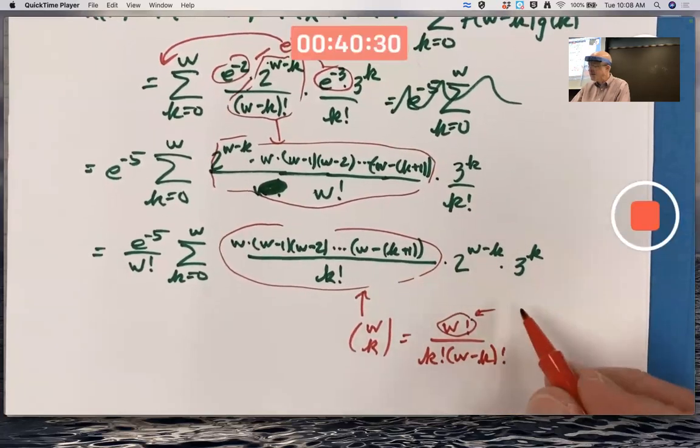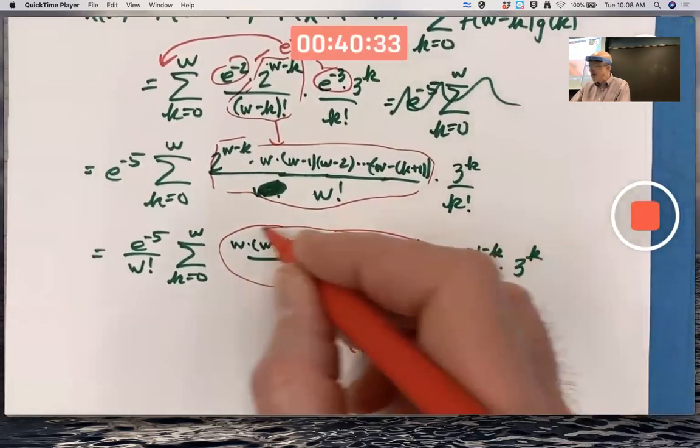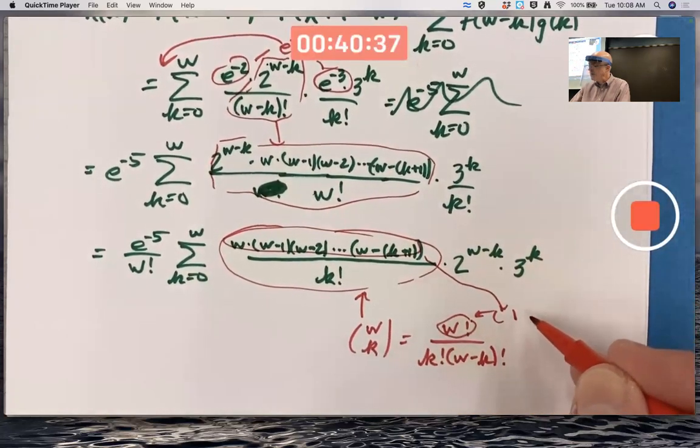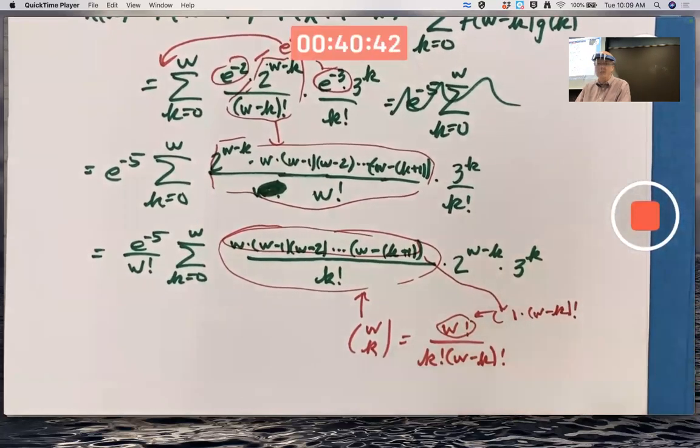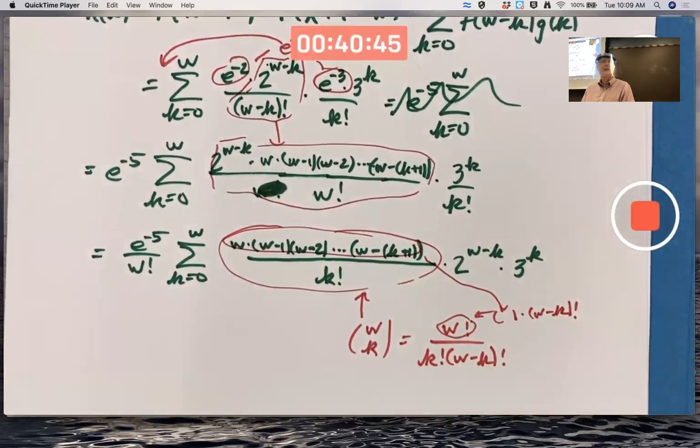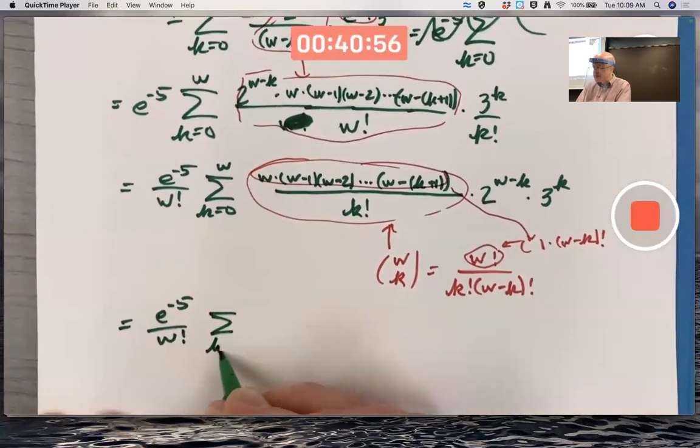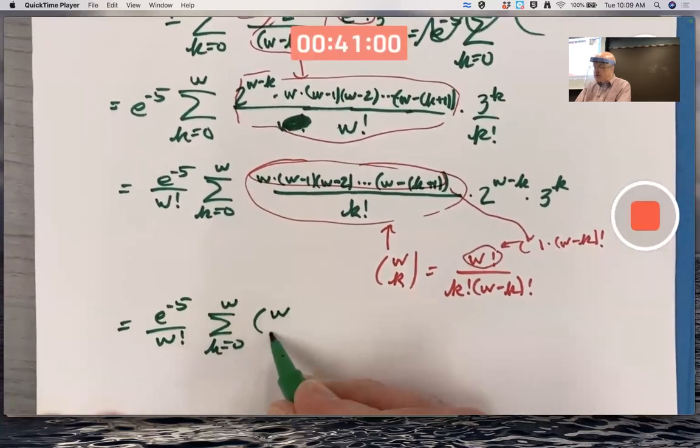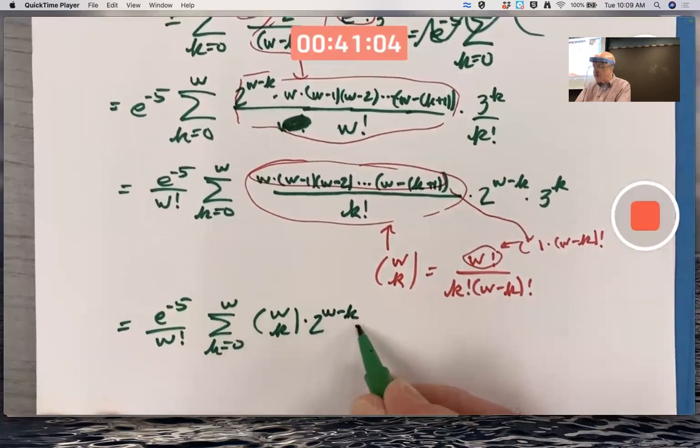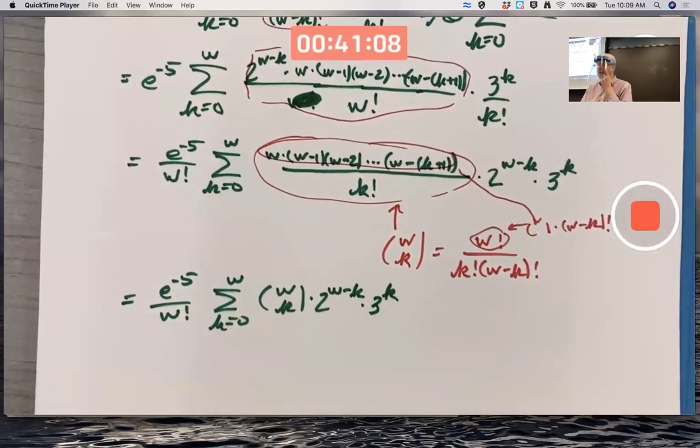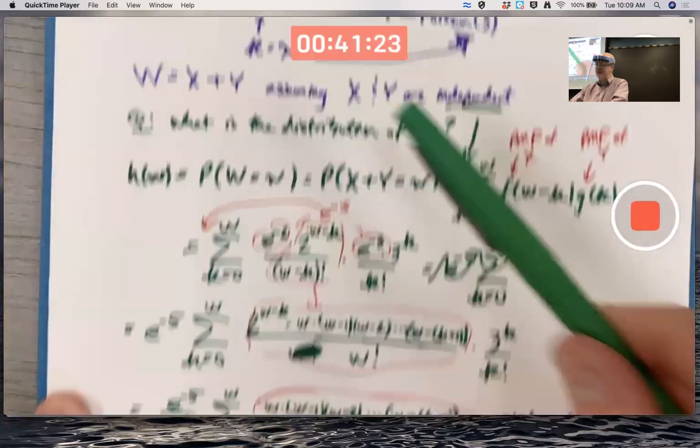It may not look like it because you think of W choose K as W factorial divided by K factorial times W minus K factorial. But those are the same thing. Because W factorial is the same as all this stuff on the top times W minus K factorial and the W minus K factorials can cancel. E to the negative five over W factorial times the summation K goes from zero to W of W choose K times two to the W minus K times three to the K. I just realized I probably shouldn't use K as my index of summation. Because I already used K as the mean of the Poisson. Sorry about that. Up here K is mean of Poisson. Down here K is index of summation.